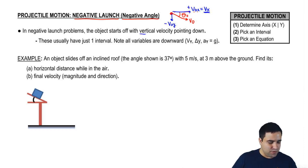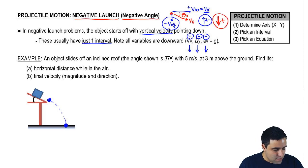In these problems, you start with a vertical velocity pointing down, and we usually have just one interval. So for example here, you're going to leave the top and become a projectile and hit the ground somewhere over here. All variables are down. Your initial velocity in the y-axis is down, your final velocity in the y-axis is down. Your delta y is going down because you're falling, and your acceleration in projectile motion problems is always going to be gravity going down.